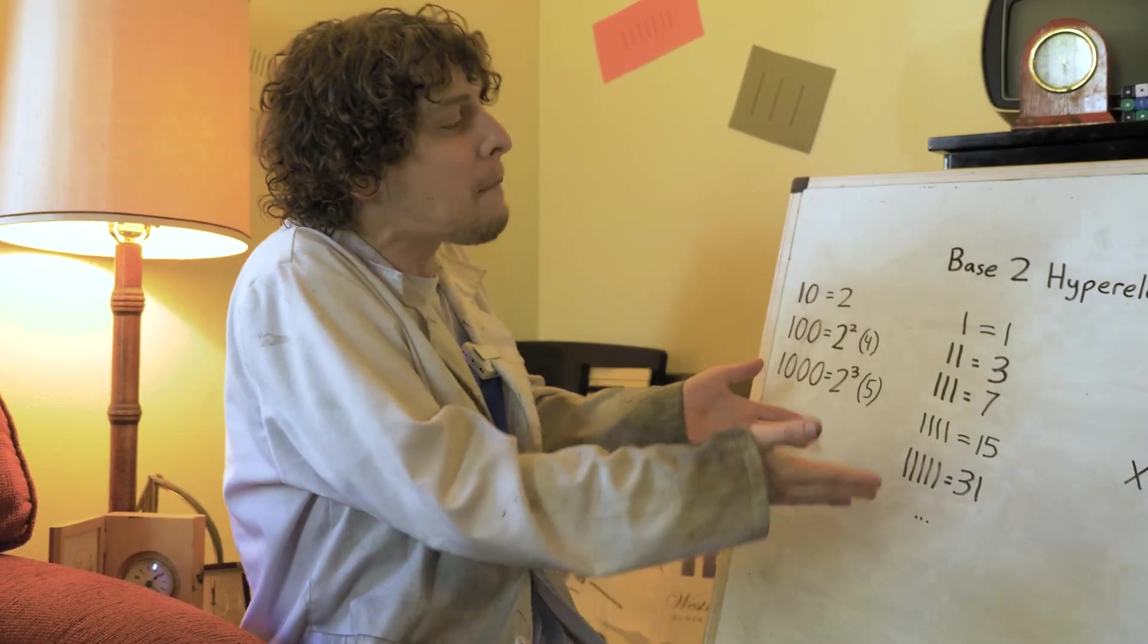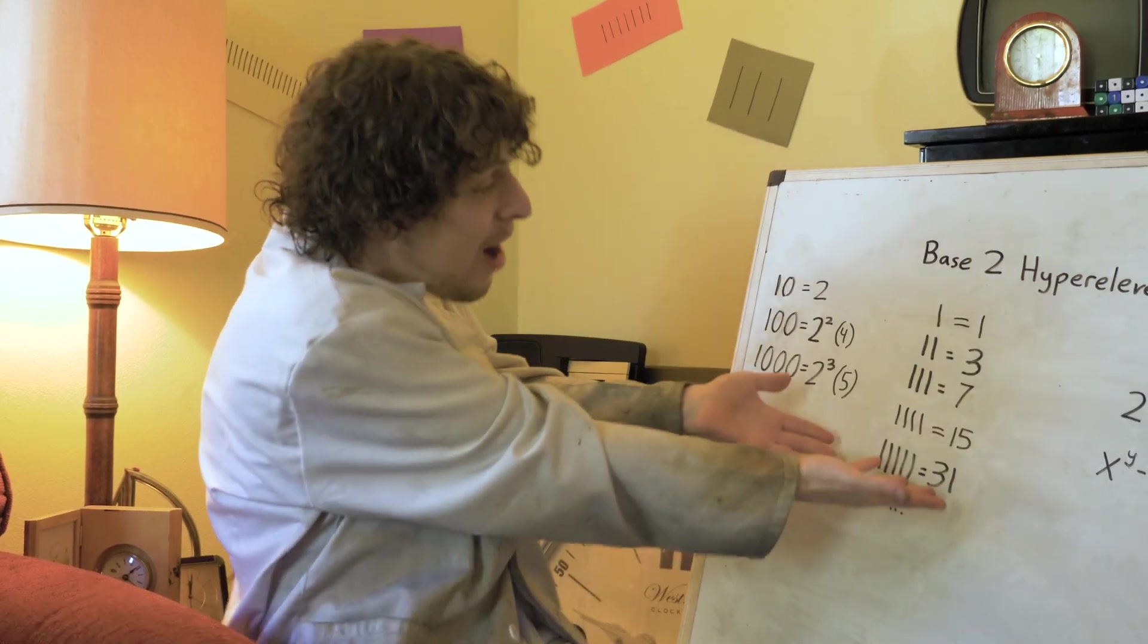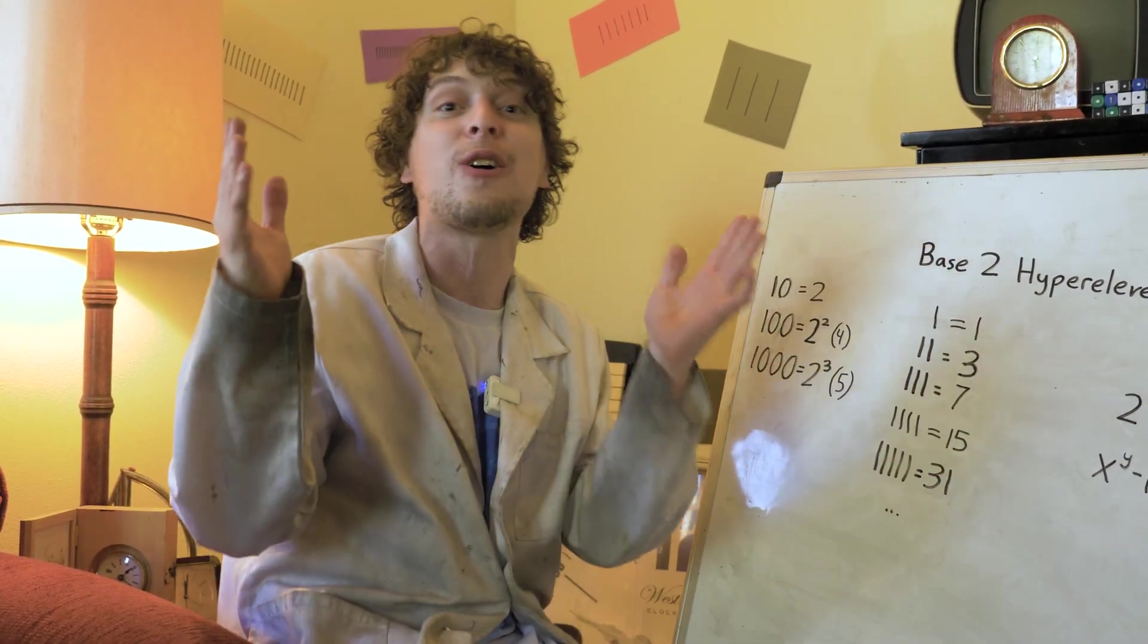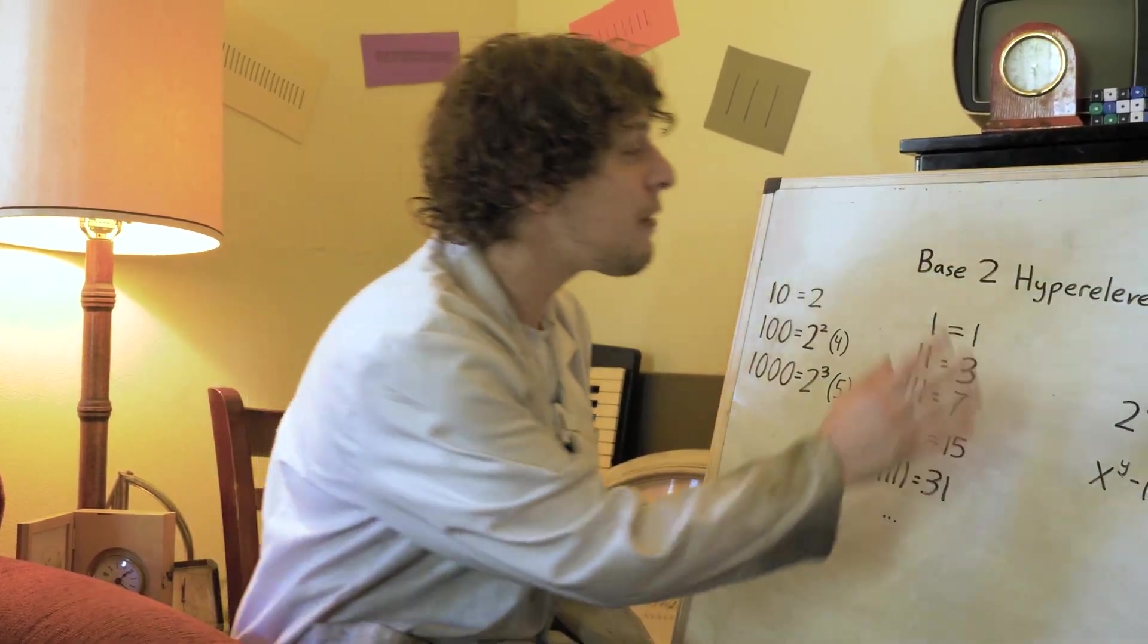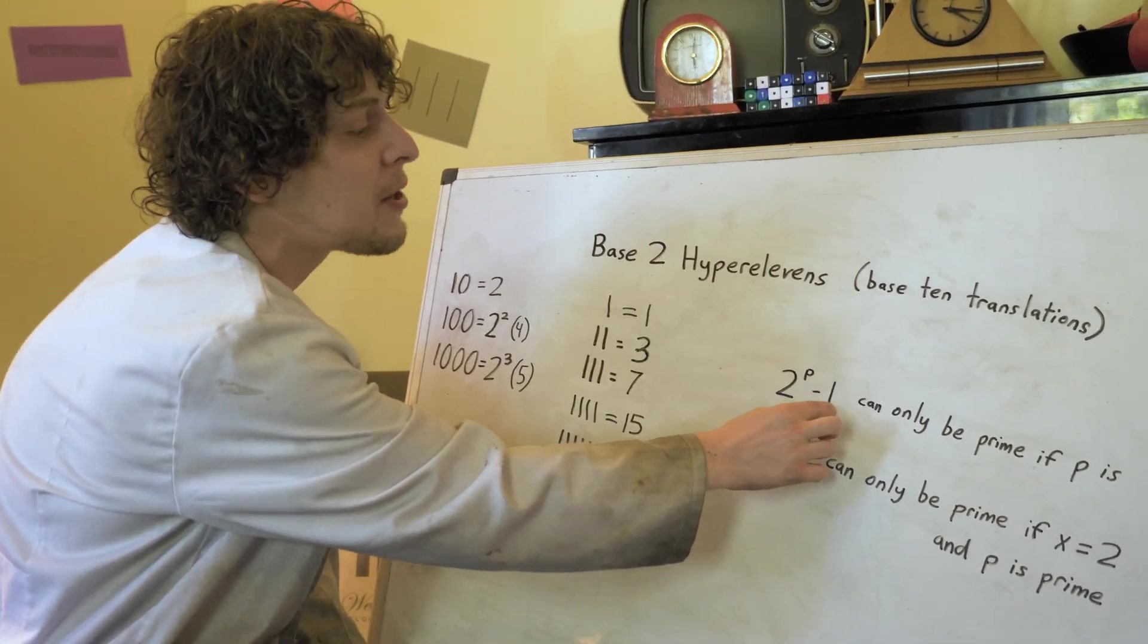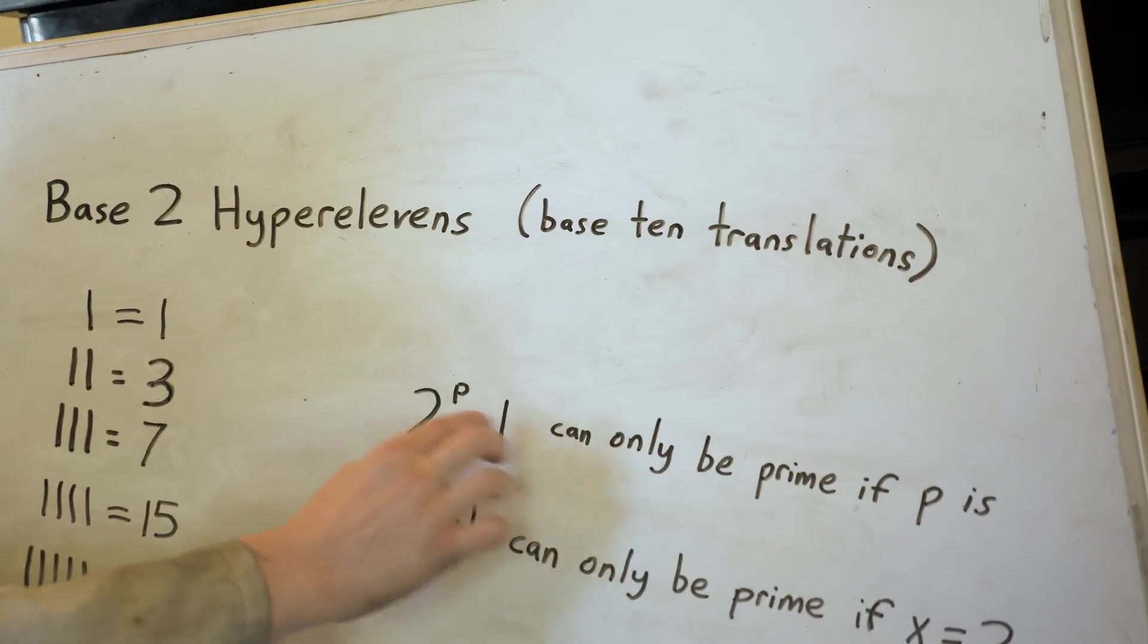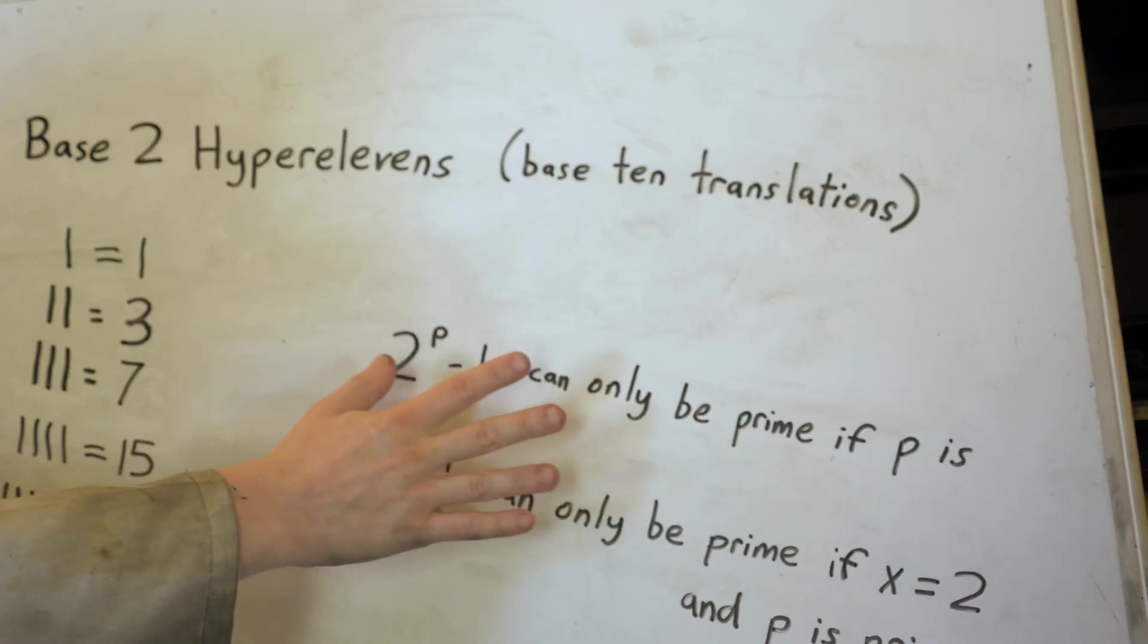Now, even more important than just the mersenne numbers are the mersenne primes, the ones of these that are also prime. Now we've already met the rule that for any hyper 11 to be prime, it's only possible if the exponent is also a prime, which is the number of ones.